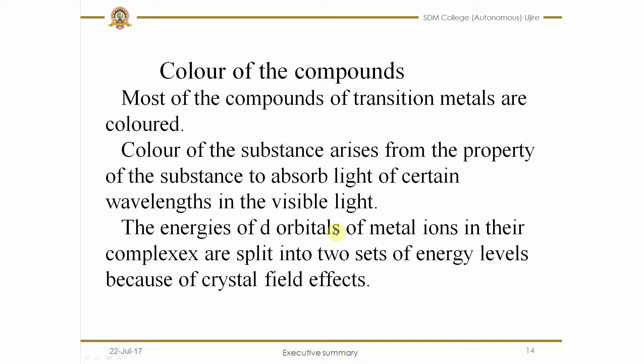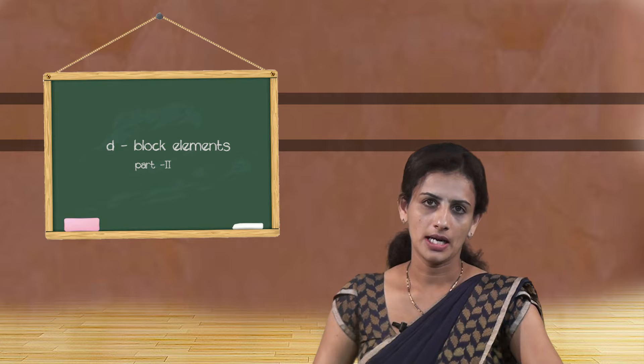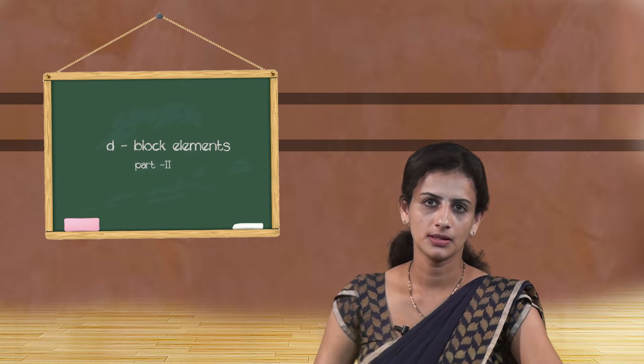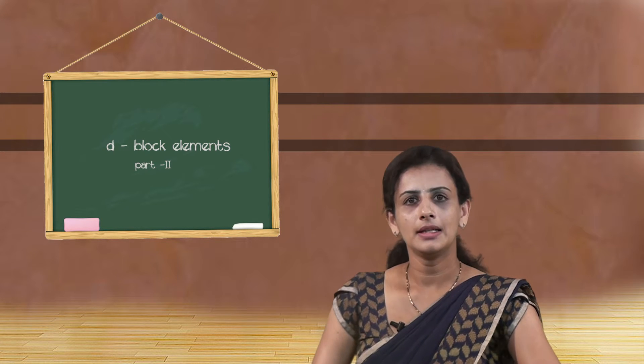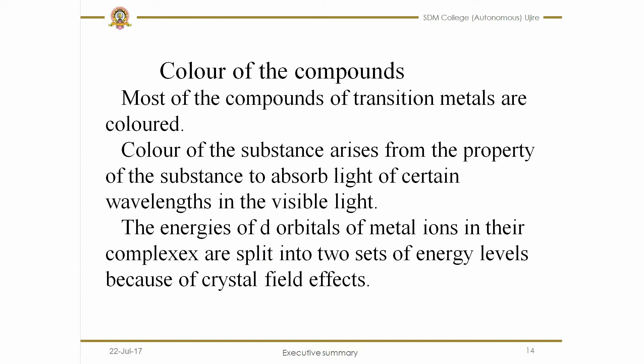Next, the colour formation in transition elements. If we compare S and P-block elements, most of the D-block elements are coloured. The colour of transition elements is due to the wavelength of light absorbed by the substance. The colour of the substance is always complementary to the colour of the light absorbed.